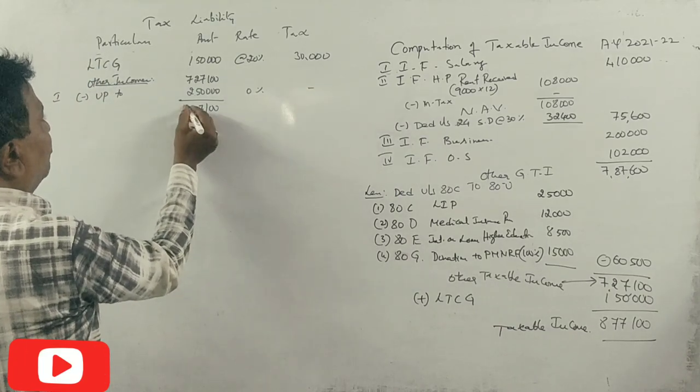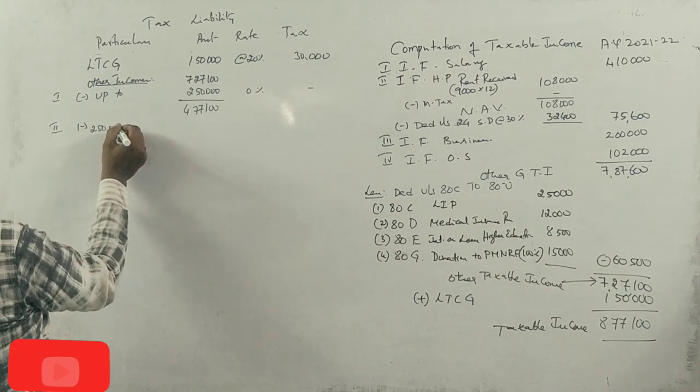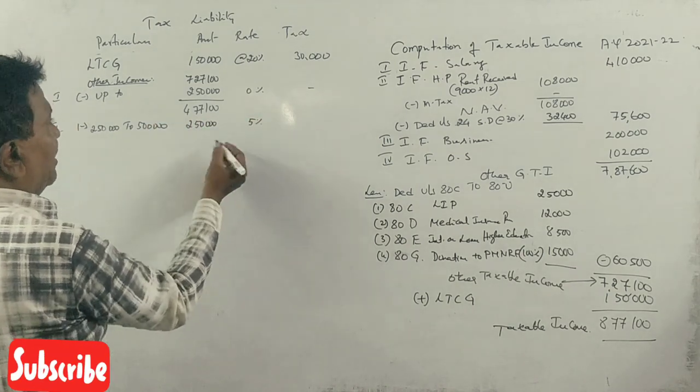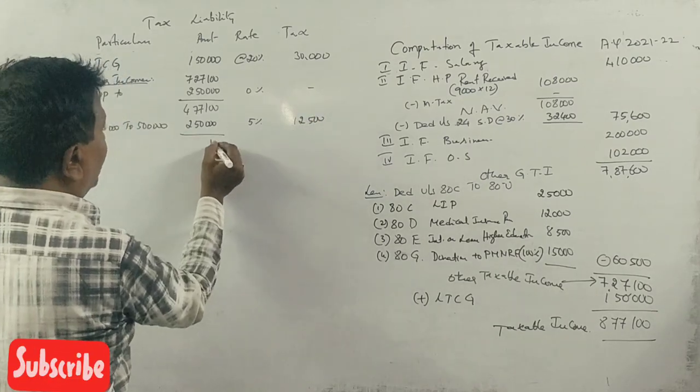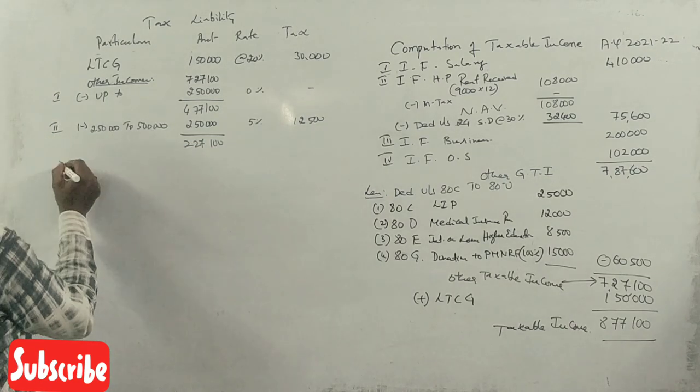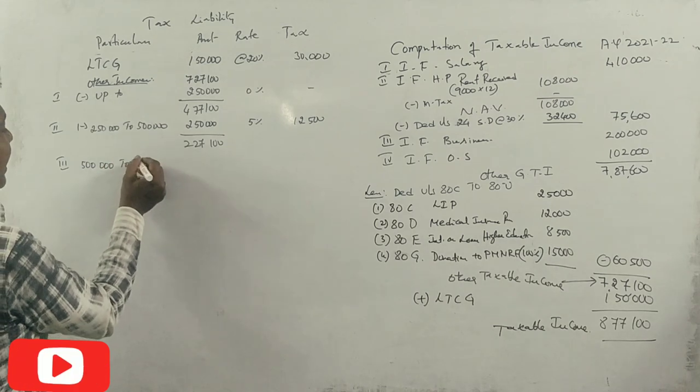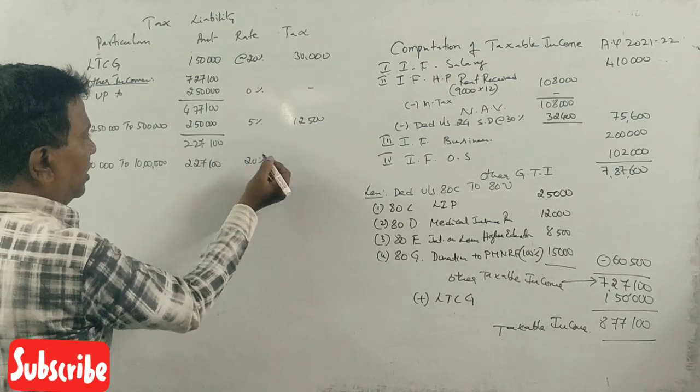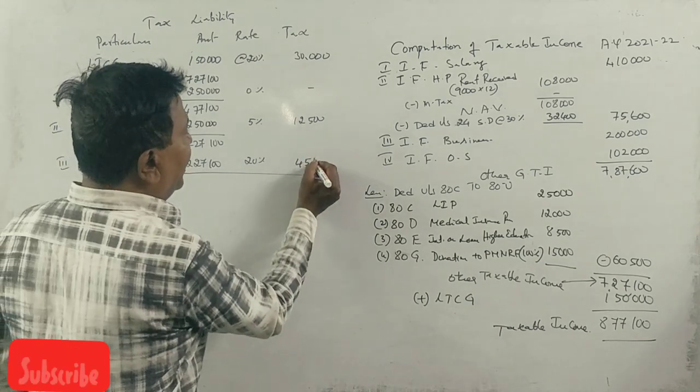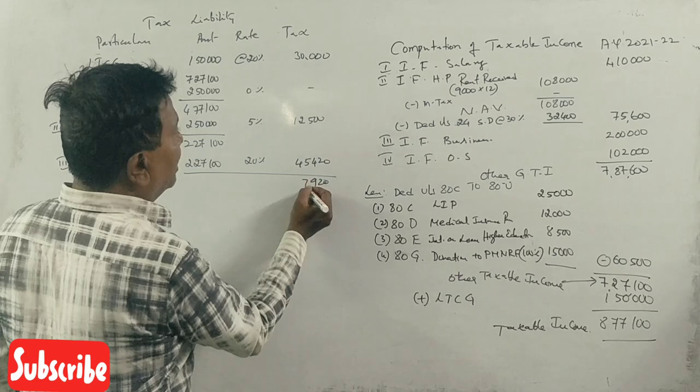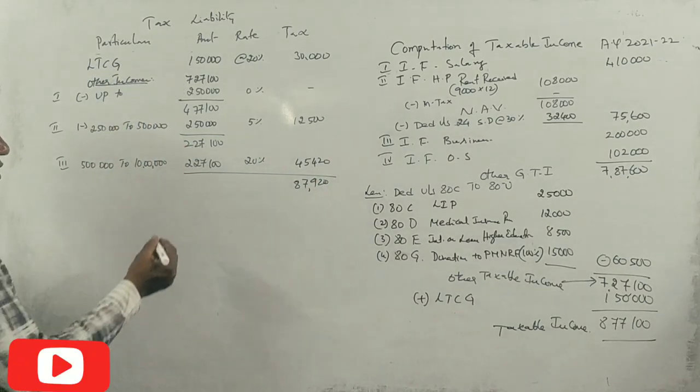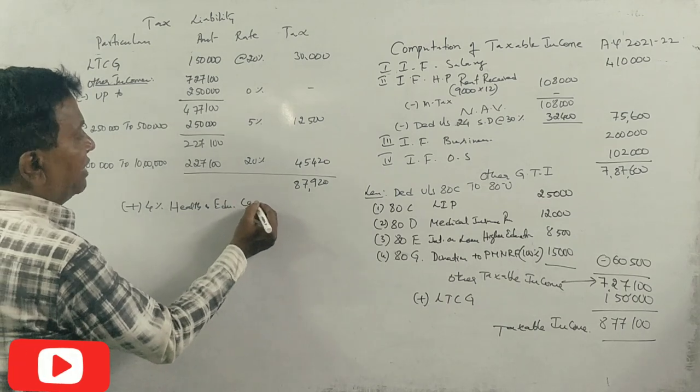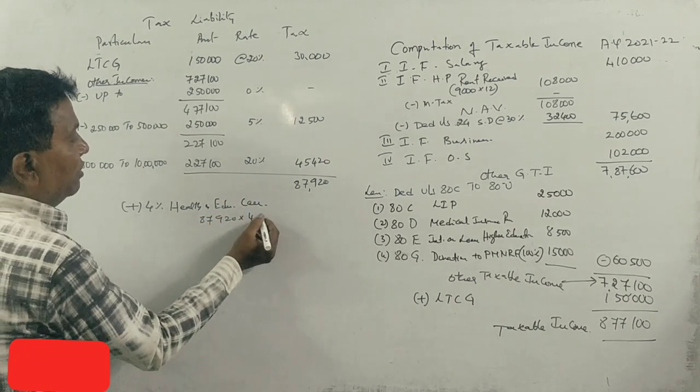First slab up to 2,50,000 is zero tax. Second slab 2,50,000 to 5,00,000, difference 2,50,000 at 5% is 12,500. Third slab 5,00,000 to 10,00,000, remaining 2,27,100 at 20% is 45,420. Total tax is 87,920.